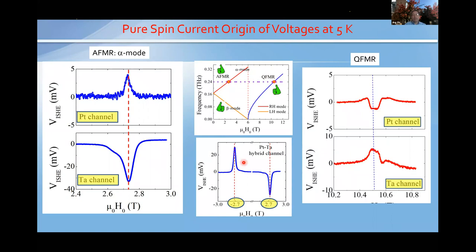When we sweep the magnetic field to the negative side — changing the angular momentum or spin polarization in the source — we observe a complete reversal of the peak voltage with zero background and no finite shift, confirming a completely inverted voltage signal. These two sign reversals (switching detector metal and switching field polarity) give us confidence that the detected signal is indeed from resonantly generated coherent magnon spin current.